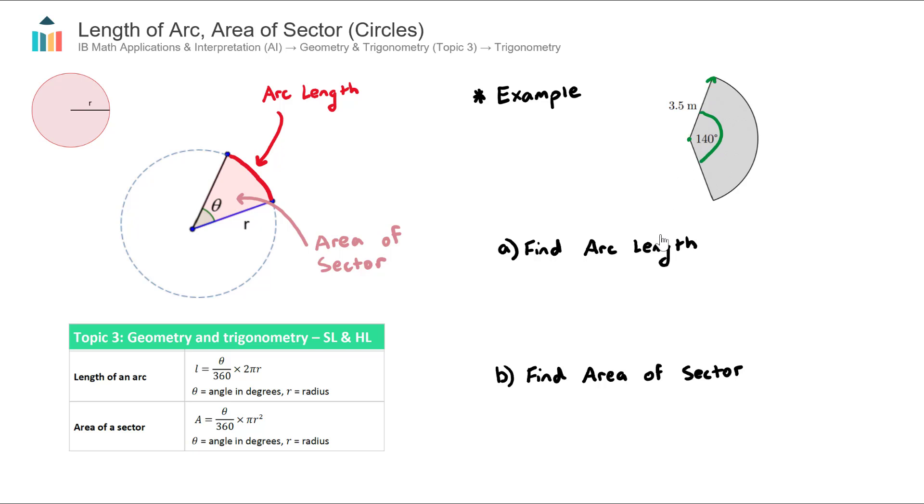The arc length is this outer length here. To find it we use the length of an arc formula. The length equals the angle of our sector, which is 140 degrees, divided by 360 multiplied by 2 times pi times the radius.